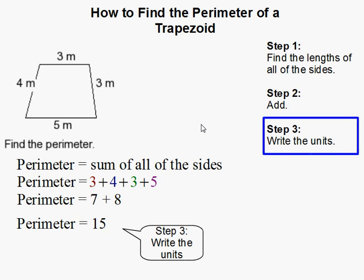And don't forget to always write the units. Now with perimeters, it's just a single unit because it's one dimensional. It's just the length of the outside.